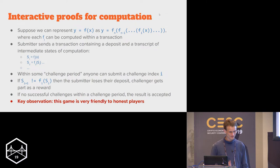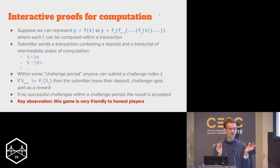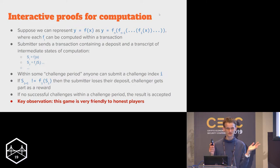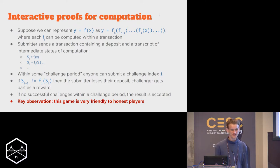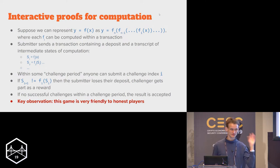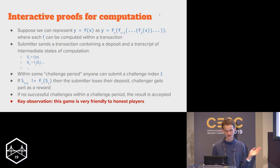Let's say you have some computation on a fairly small piece of data, but that computation takes a really long time to verify. This could be a VDF, this could be verifying a bulletproof, this could be calculating the millionth Fibonacci number just because you care about it inside of a blockchain. It could be lots of things.